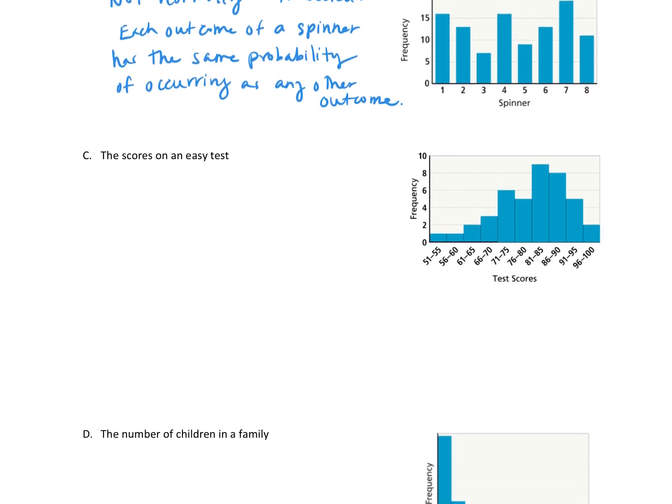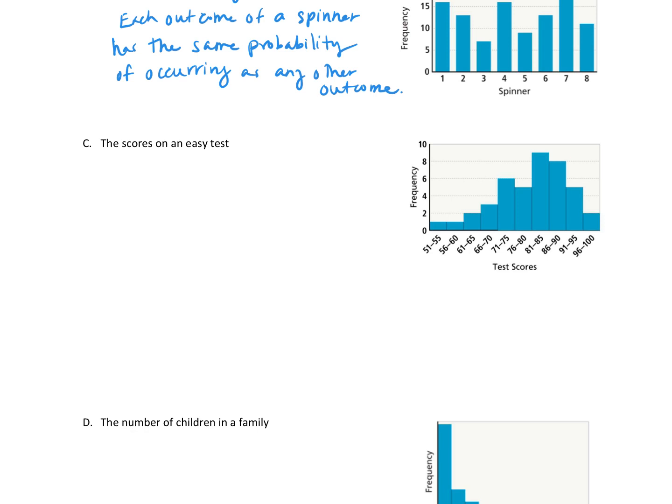All right, part C: the scores on an easy test. Do they represent a normal distribution? Well, if we take a look at the histogram, the shape of the data, we can see that it is skewed left. So this is not symmetric about the mean.